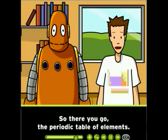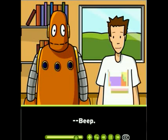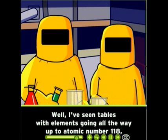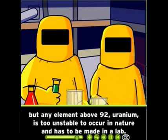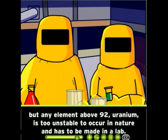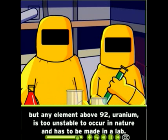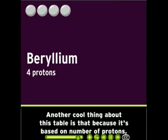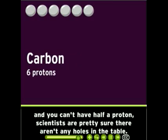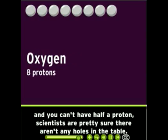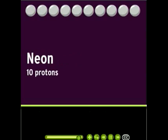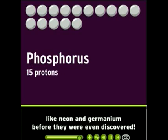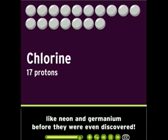So there you go — the periodic table of elements. I've seen tables with elements going all the way up to atomic number 118, but any element above 92, uranium, is too unstable to occur in nature and has to be made in a lab. Another cool thing about this table is that because it's based on number of protons and you can't have half a proton, scientists are pretty sure there aren't any holes in the table. Using an early version of the table, scientists were even able to predict the existence of elements like neon and germanium before they were even discovered.